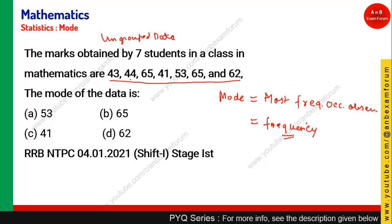Looking at the data: 43 appears once, 44 once, 65 appears two times, 41 once, 53 once, and 62 once. So 65 has occurred two times whereas all others have a frequency less than two. Therefore 65 is the mode. Option B is the correct answer, and this question was asked in NTPC.